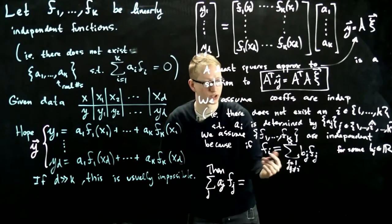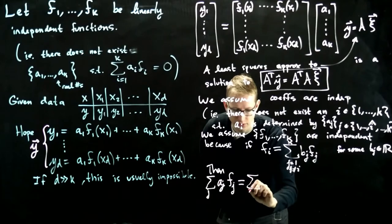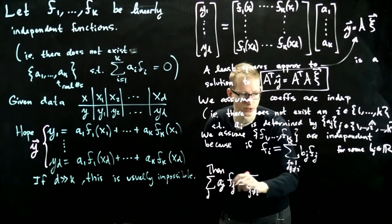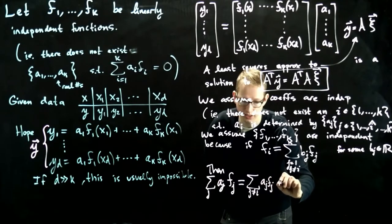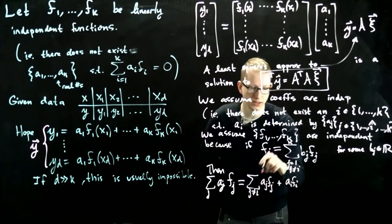Because we have a sum over j where j is not equal to i, so this is j not equal to i, and the sum goes from 1 to k. So this is aj*fj, but then we also have plus ai*fi, but this term equals this.